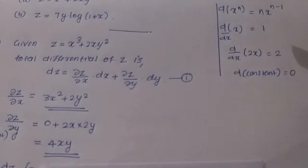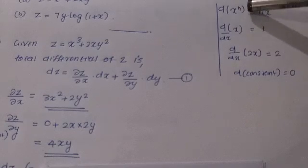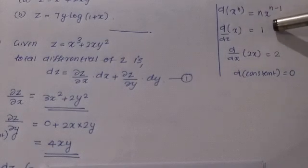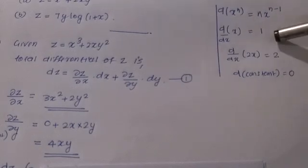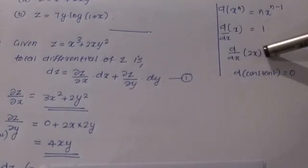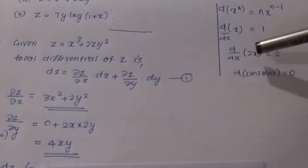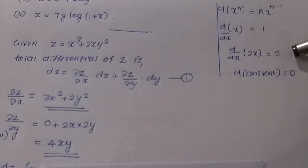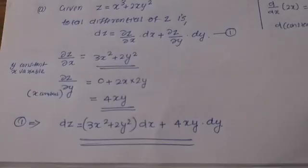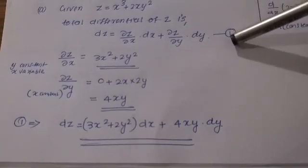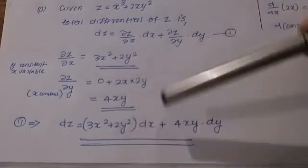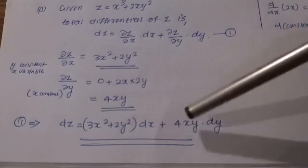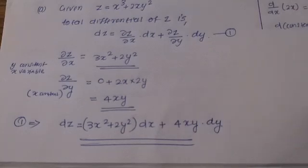Using the rule d/dx(xⁿ) = nxⁿ⁻¹, and the derivative of x with respect to x is 1. Now substituting into the formula, dz = (3x² + 2y²)dx + (4xy)dy. That is the answer for the first problem.